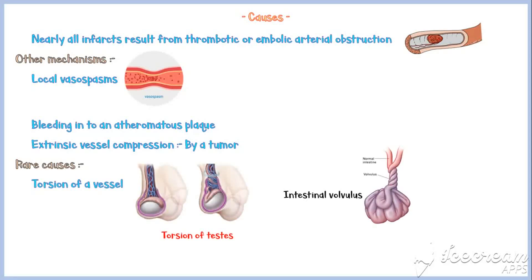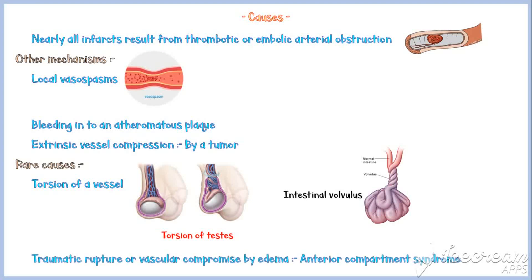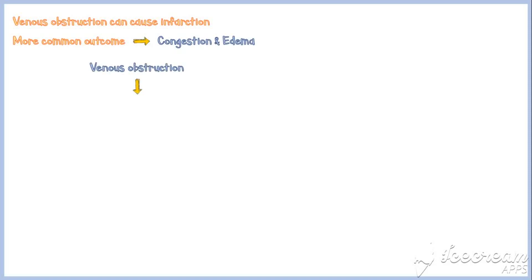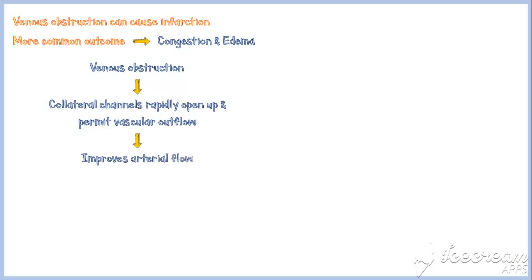Other rare causes include traumatic vascular compromise by edema, such as in anterior compartment syndrome. Although venous obstruction can cause infarction, the more common outcome is congestion and edema. When there is venous obstruction, collateral channels rapidly open up and permit vascular flow, which improves arterial flow to the affected organ or tissue. Therefore, those tissues are less likely to get infarctions.